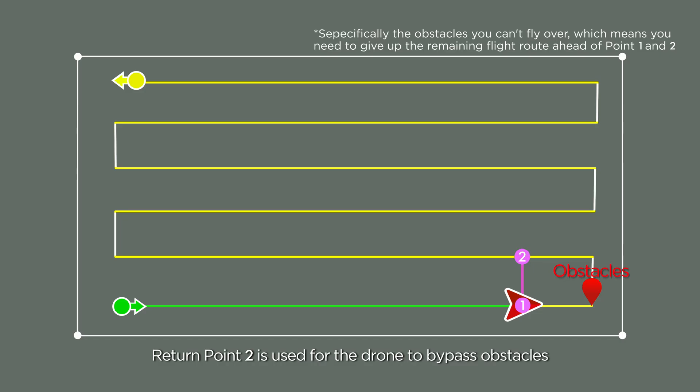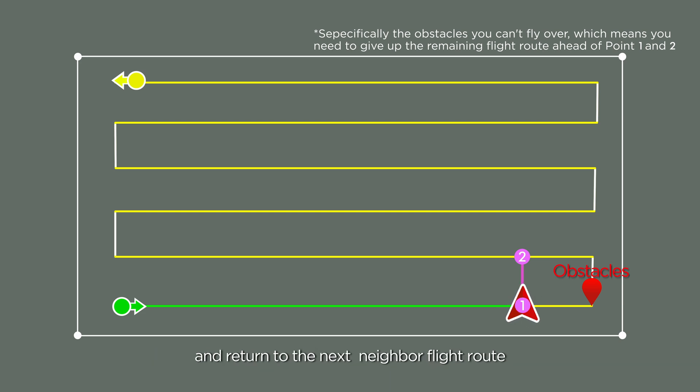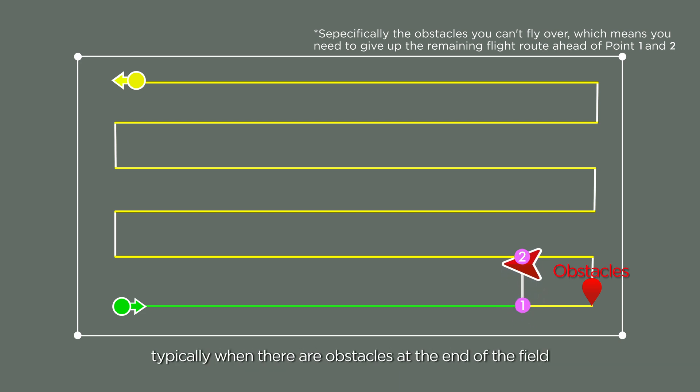Return point 2 is used for the drone to bypass obstacles and return to the next neighbor flight route, typically when there are obstacles at the end of the field.